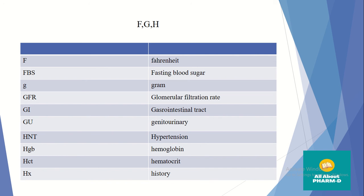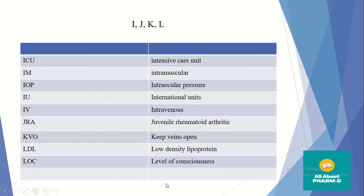GU means Genitourinary. HTN means Hypertension. HGB stands for Hemoglobin. HCT means Hematocrit. HX means History. ICU stands for Intensive Care Unit.